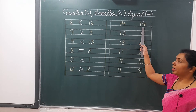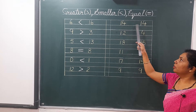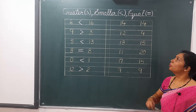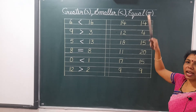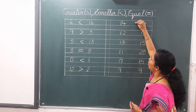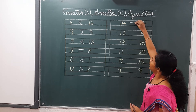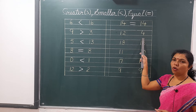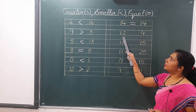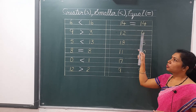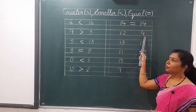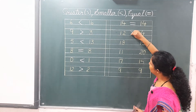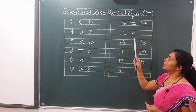Fourteen and fourteen — both numbers are the same, so we will use the equal sign because both are equal. Twelve and four: twelve comes after four, so twelve is greater than four. The mouth will be open towards twelve. This is the greater sign.